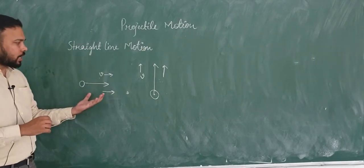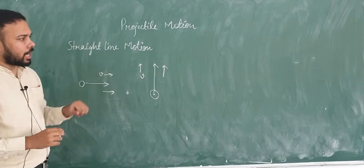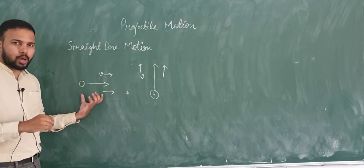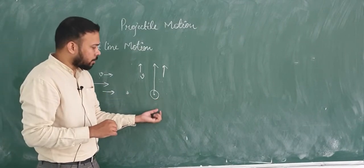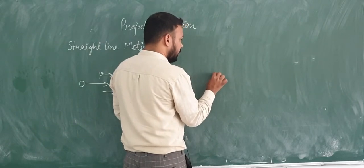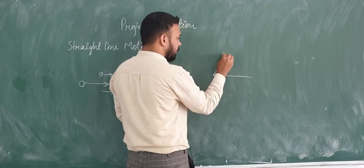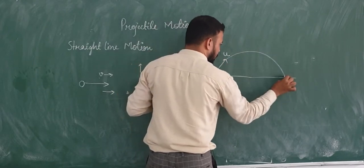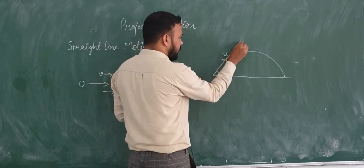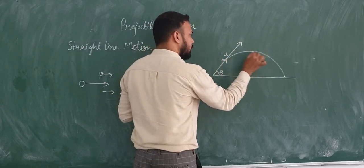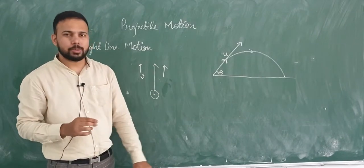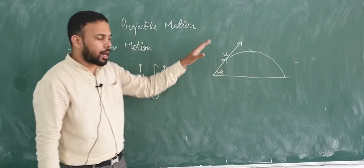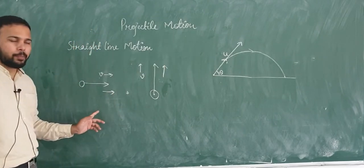This is the basic definition of straight line motion. But unlike in projectile motion, if we throw a ball at an angle theta with respect to the ground, the ball will not go straight — it will follow a curved path. If you compare it, the direction of initial velocity is at the angle, but the direction of motion of the particle changes at each point. This motion is called projectile motion because in projectile motion the direction of velocity and direction of motion are different — they are not parallel.